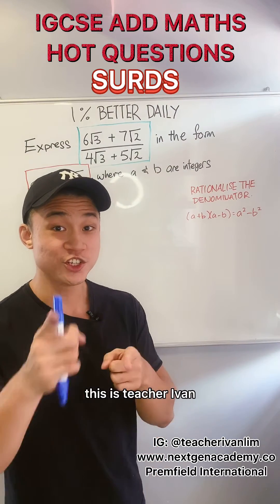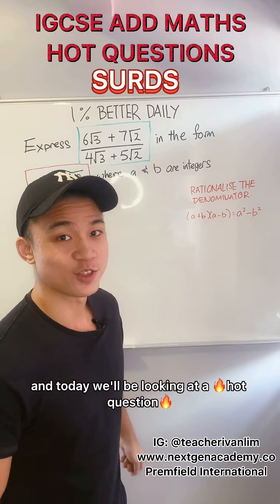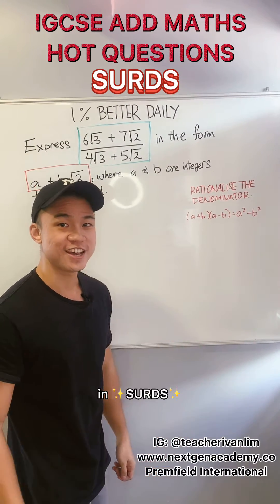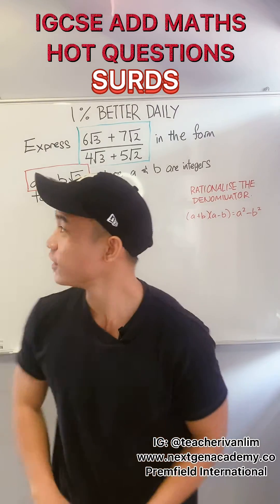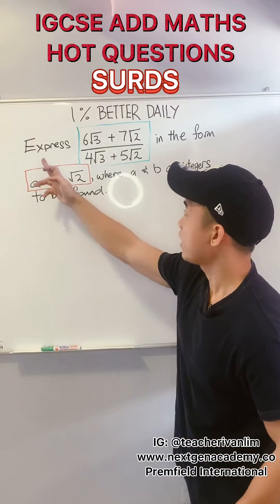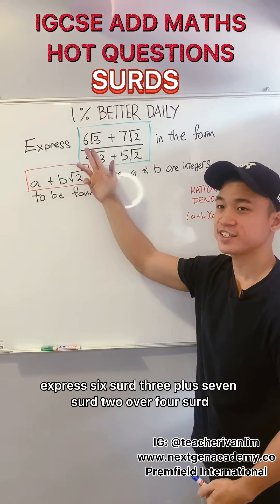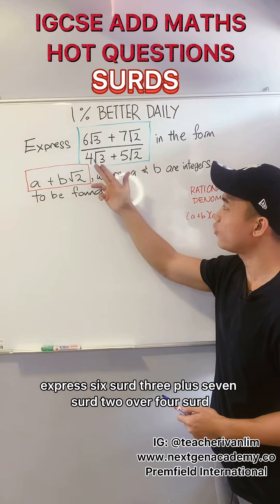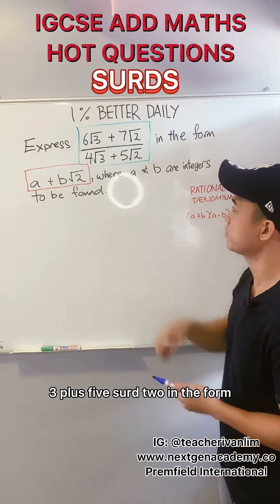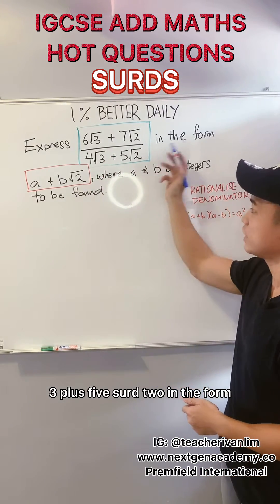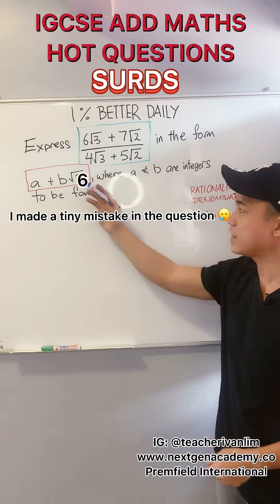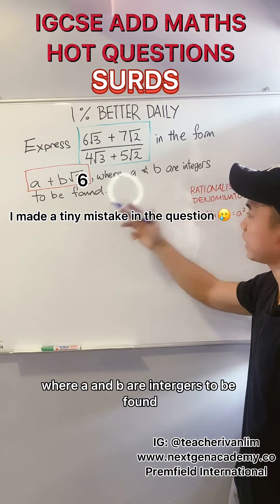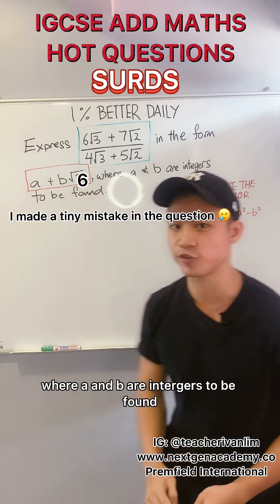What's up everybody, this is teacher Ivan and today we'll be looking at a hot question in surds. Express 6√3 plus 7√2 over 4√3 plus 5√2 in the form a plus b√2, where a and b are integers to be found.